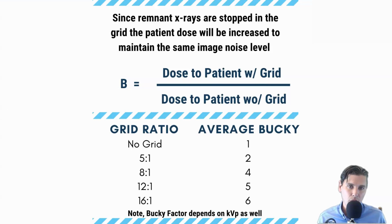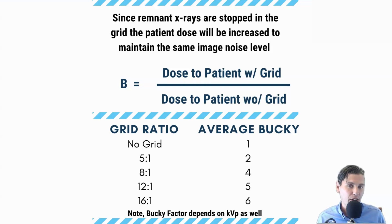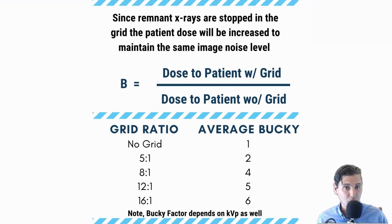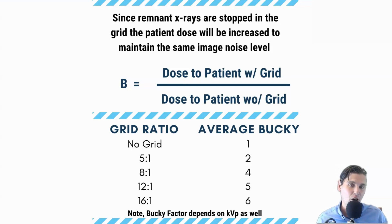The Bucky Factor will also depend on the kVp, but these are average values. For a 5:1 grid, you're going to need about a factor of 2 more in terms of the mA on the system. You'll have to take tube loading into consideration when choosing scatter grids. The contrast improvement factor will really help you identify lesions better, but you have to weigh that against the Bucky Factor — the increase in dose because not all photons make it all the way through.